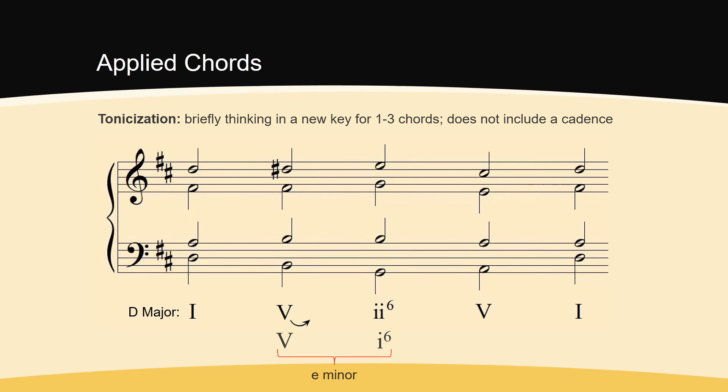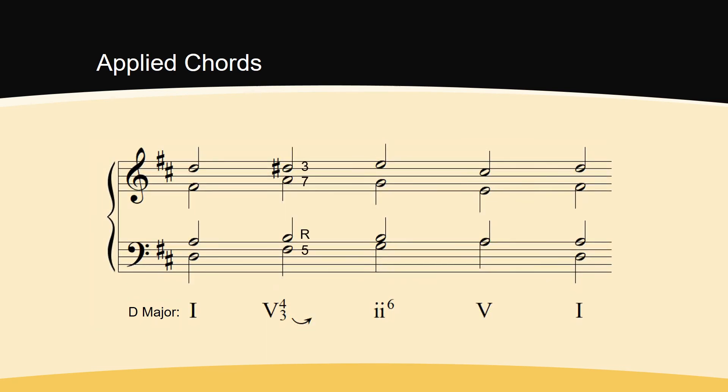An applied dominant can be either a major triad or a major minor 7th chord. In this example, I've replaced the triad with a 7th chord. Applied chords can be in an inversion and embellish any chord built on any scale degree other than the tonic.